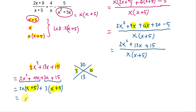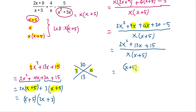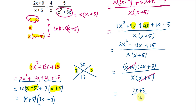Pulling out x plus 5, we are left with 2x plus 3. So the factored numerator is x plus 5 times 2x plus 3. Writing the full expression as (x plus 5)(2x plus 3) over x times x plus 5, we can cancel the x plus 5 in the numerator and denominator. The final simplified answer is 2x plus 3 over x — a nice clean result from a complicated starting expression.